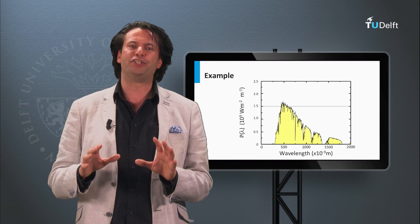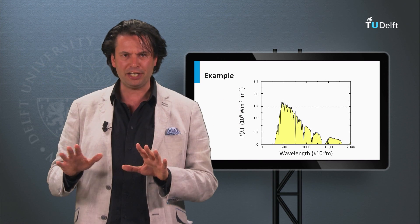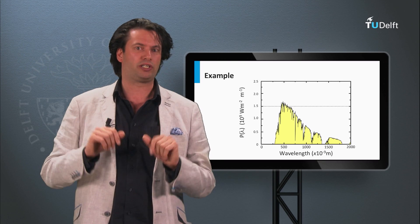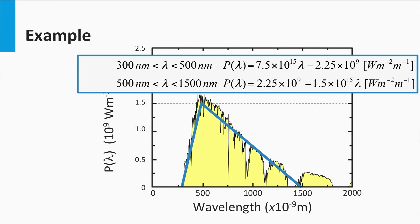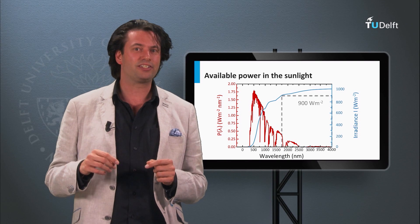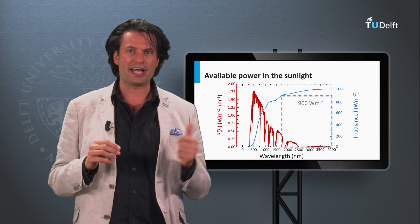I will show you an easy way to estimate the current density using a simple approximation of the solar spectrum. The spectral power density of an AM1.5 solar spectrum can be roughly approximated with a linear increasing line from 300 up to 500 nm and a linearly decreasing line from 500 nm up to 1500 nm. The area under this triangular-shaped spectrum represents the irradiance, which for this case is 900 watts per square meter — in excellent agreement with the real value for irradiance up to 1500 nm from the real AM1.5 spectrum.